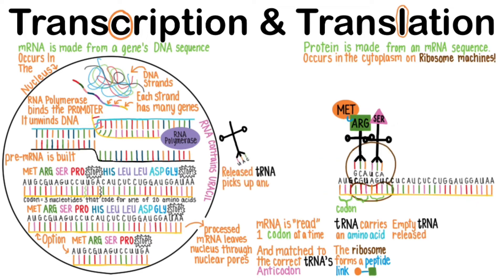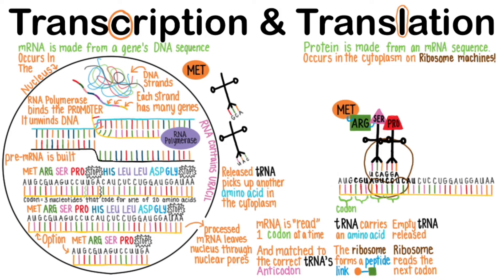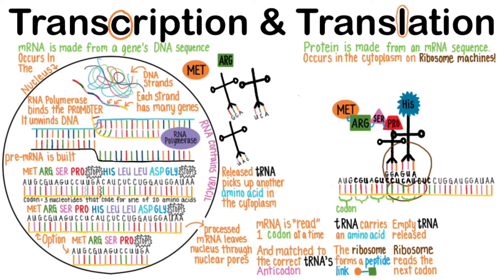The released tRNA picks up another amino acid in the cytoplasm — in this case, another methionine. The ribosome forms a peptide linkage between the next two amino acids, then reads the next codon, CCU, and only allows the matching anticodon of the tRNA that carries proline to take up a spot on the ribosome. The tRNA that carried arginine is now released into the cytoplasm to find another arginine. The next codon demands the matching tRNA carrying histidine, whose arrival kicks off the empty tRNA that had brought serine, which goes off to bind another serine.